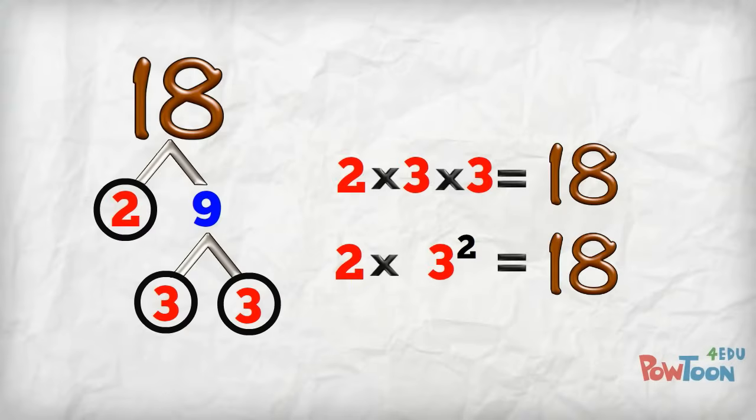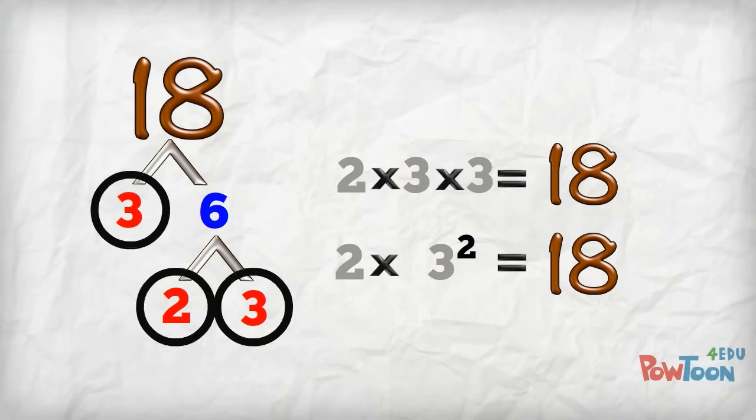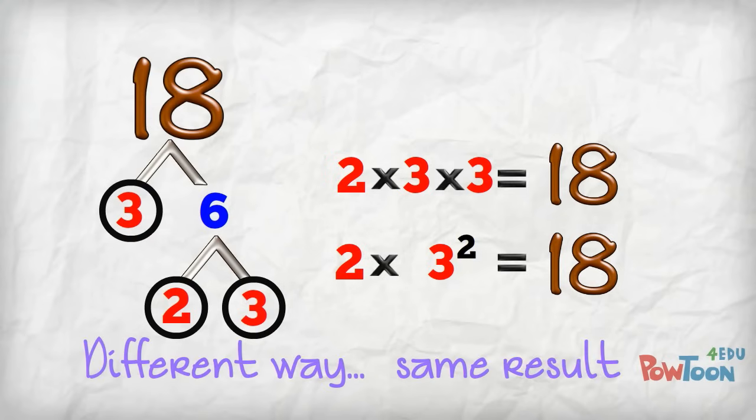I could have done it differently and said 18 is from 3 times 6. 6 is from 2 times 3. I still get the same prime factors of 2 times 3 times 3 or 2 times 3 to the power 2. Different way of getting there but it's still the same result.